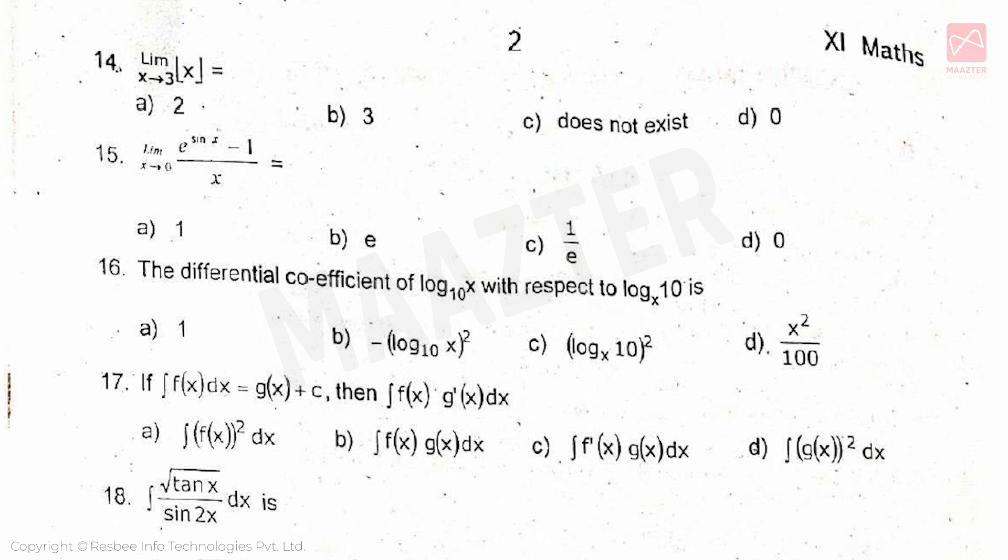A vector makes equal angle with the positive direction of the coordinate axis, then each angle is equal to, answer is option C. Next, limit x→3 of x equal to, answer is option A. Next, limit x→0 of (e^(sin x) - 1)/x equal to, answer is option A. Next, the differential coefficient of log₁₀x with respect to log_x(10) is, answer is option B.